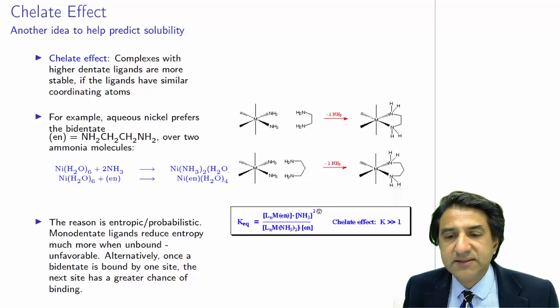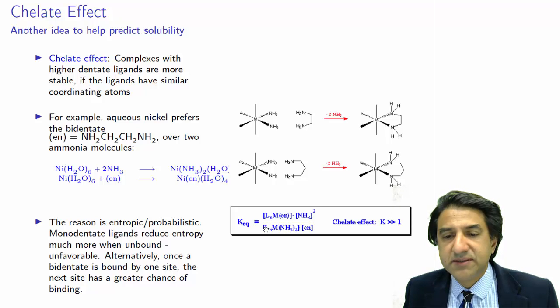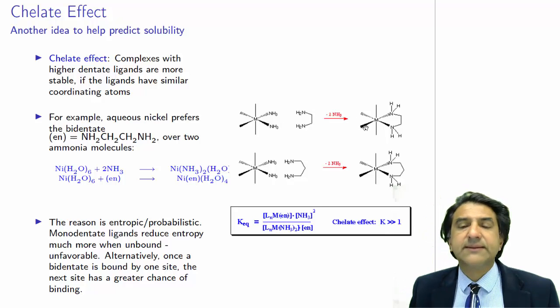So the chelate effect says that the concentration, equilibrium constant, concentration of MLN with the ethylenediamine is much bigger than the corresponding terms on the bottom. K is much bigger than 1. And this equilibrium lies towards the right-hand side.